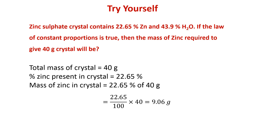The total mass of crystal given is 40 grams. The percent of zinc present in the crystal is 22.65%. So the mass of zinc in the crystal equals 22.65 divided by 100, multiplied by 40, which gives 9.06 grams. Therefore, 9.06 grams of zinc is required to give 40 grams of crystal.